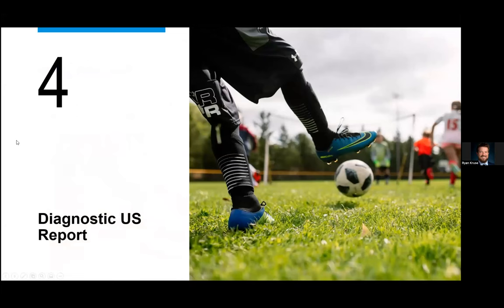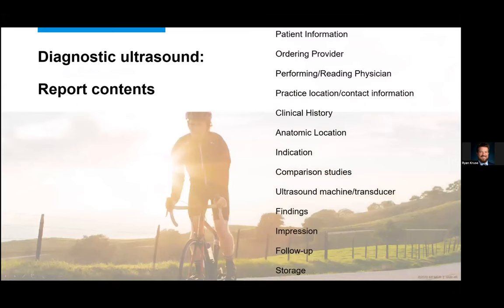Now I've completed the relevant portions of my scan, including the required structures and anything else appropriate based on her clinical presentation. Let's prepare the report. A good ultrasound report should generally have information including the ordering provider, who performed it, where you are, contact information, clinical history, anatomic location, indication, any comparison studies, the imaging equipment used, findings, impression, follow-up plans, and where the image is archived.